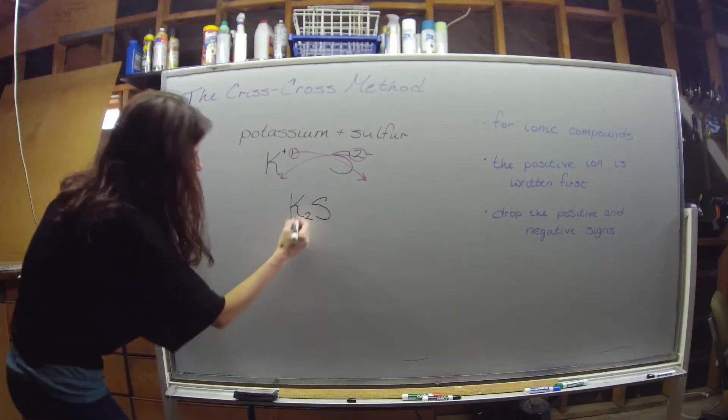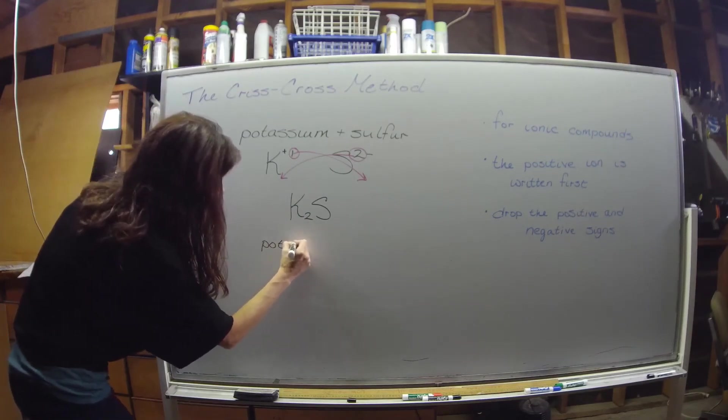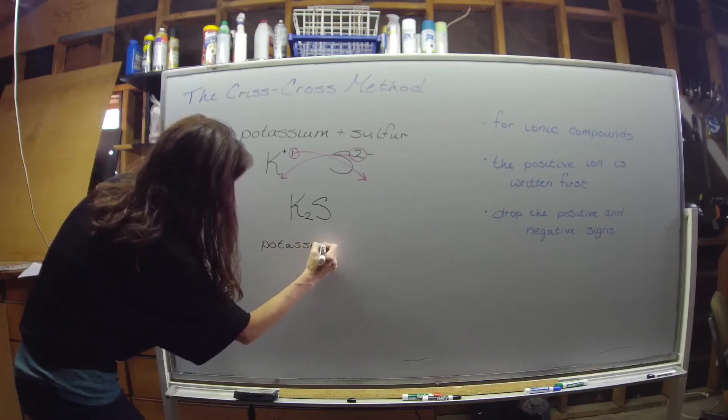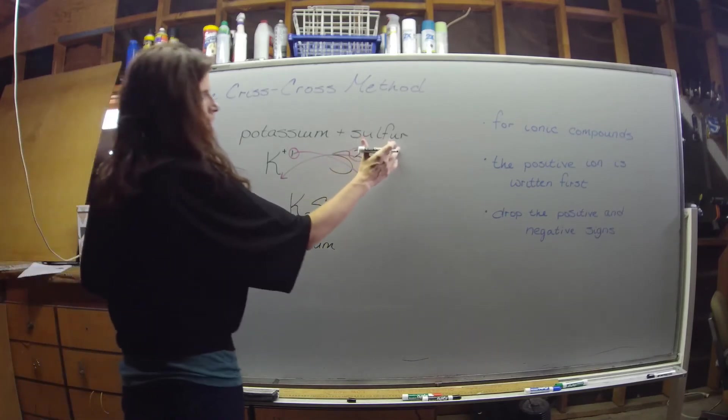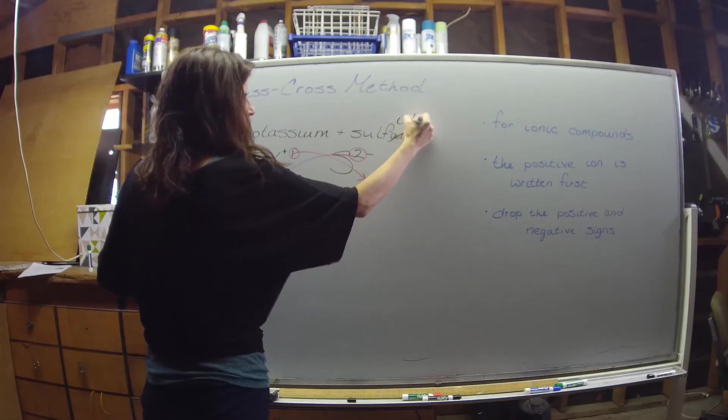For naming this you're going to just keep the name of the metal the same, so we'll do potassium, and then on the name of the nonmetal the ending gets dropped and you replace it with -ide.